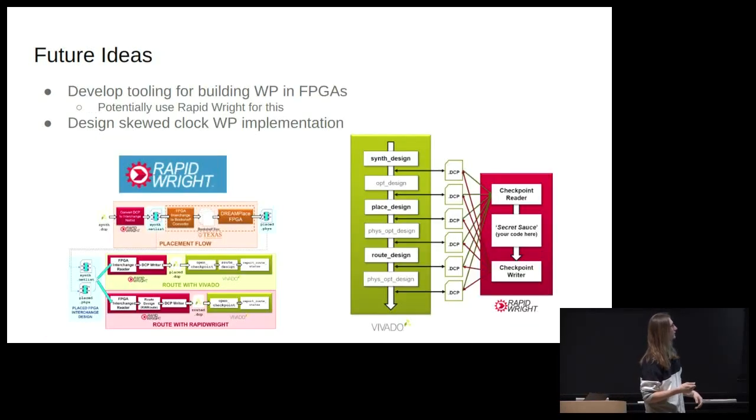So some future ideas. Building wave pipelines is a ton of fun and I've learned a lot doing it. But I'm also very interested in PNR algorithms and EDA tooling and I found this cool tool called RapidWrite that essentially lets you build different stages into Vovato. So I think it would be really cool to try and automate some of this and not do it all by hand. And then I also want to try implementing a skewed wave pipeline implementation. So instead of having a self-synchronous one, I can skew the clock and see if I can achieve better results.